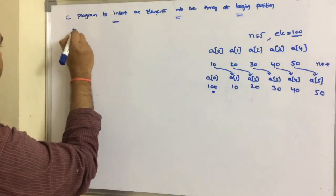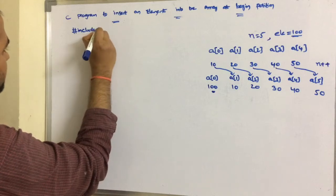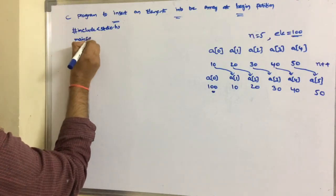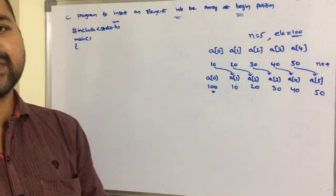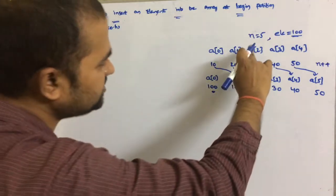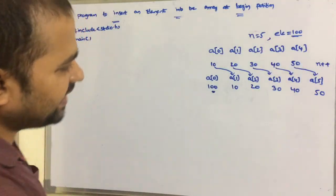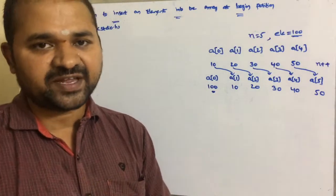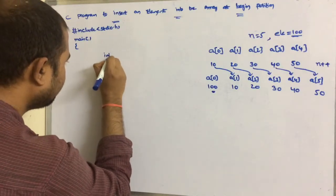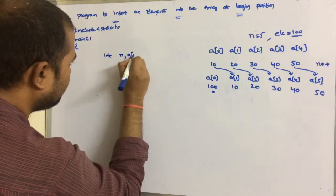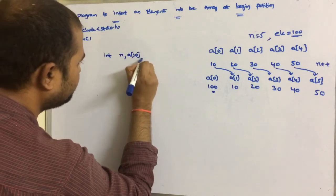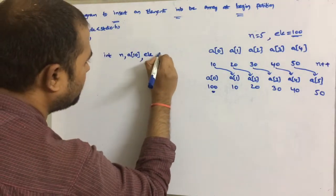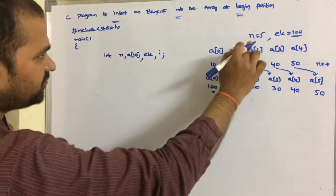The first statement is #include <stdio.h> because we are using printf and scanf functions. Execution starts from the main function. The input variables are n, ele, the array, and a loop variable i. We declare: int n, a[10], ele, i.